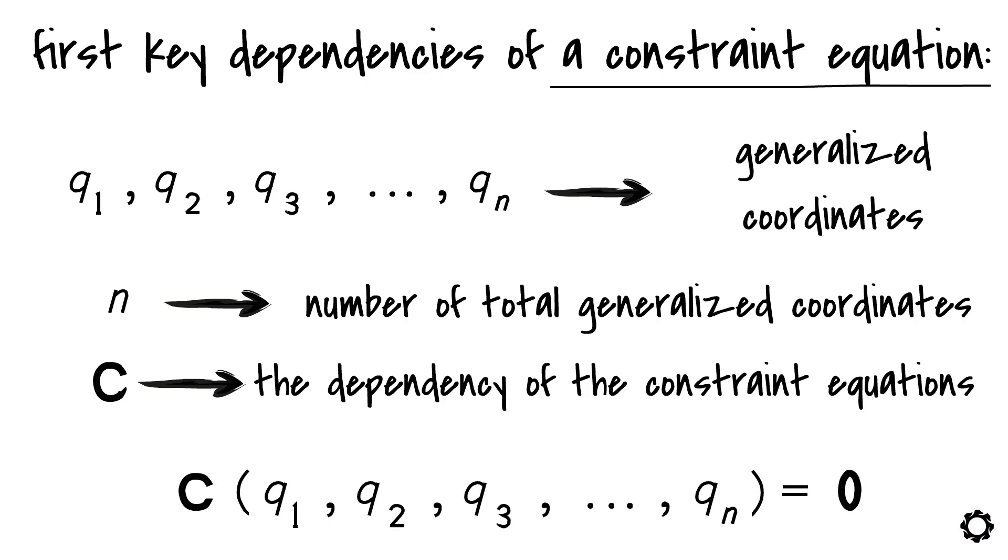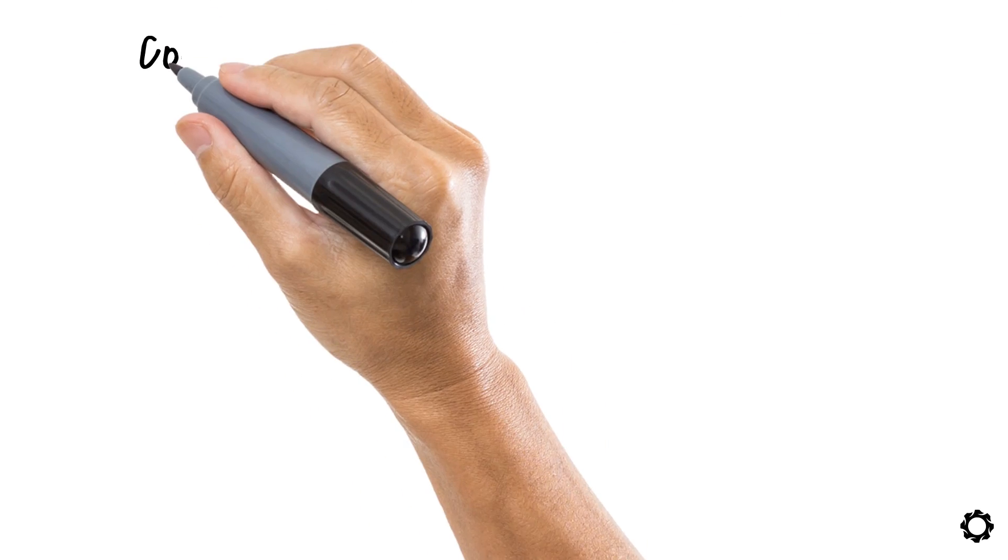Wait a second, you might say, you were saying that constraint equations depend on the generalized coordinates and that you represent these constraint equations with the letter C. That was clear, but now you say that they have to be equal to zero. How come? Well, that's another thing about constraint equations.